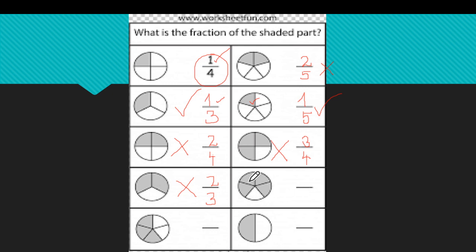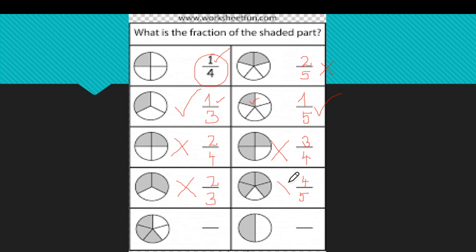Let's count here. How many equal parts do we have? One, two, three, four, five — five equal parts. How many of them are shaded? One, two, three, four — four of them are shaded. Is this a unit fraction? No, because there are four equal parts shaded, not one.